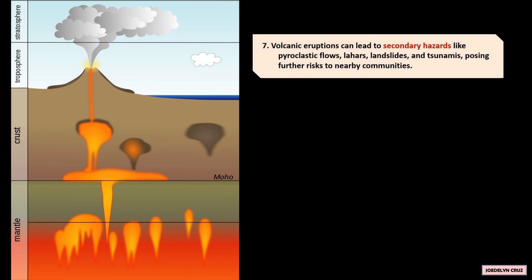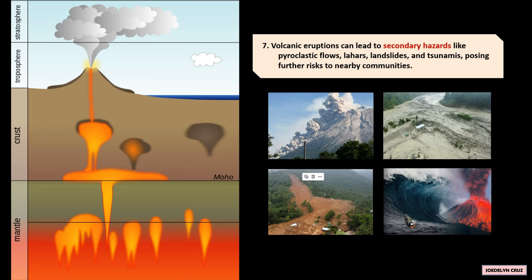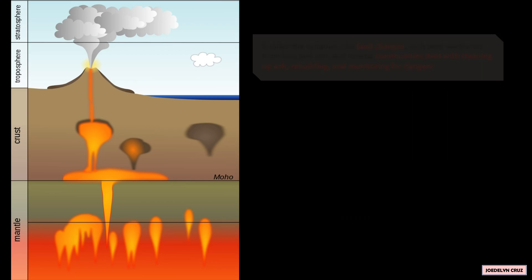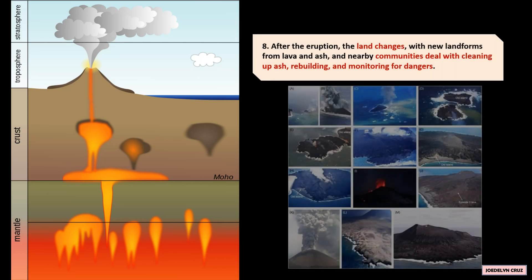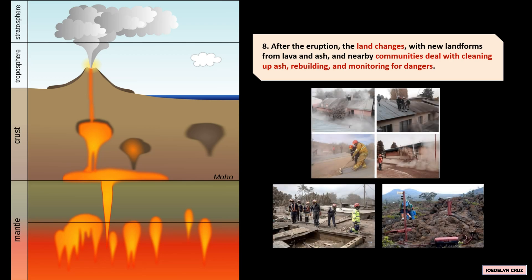Volcanic eruptions can lead to secondary hazards like pyroclastic flows, lahars, landslides, and tsunamis, posing further risk to nearby communities. After the eruption, the land changes with new landforms from lava and ash, and nearby communities deal with cleaning up ash, rebuilding, and monitoring for dangers.